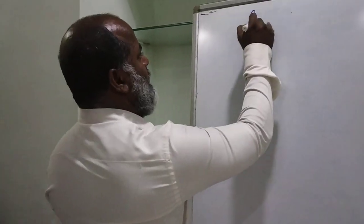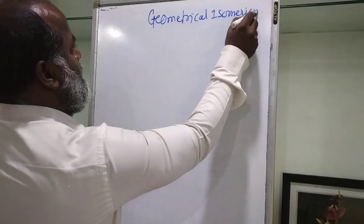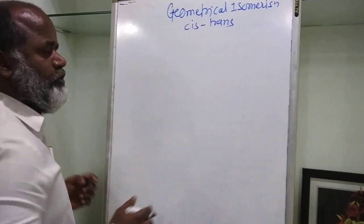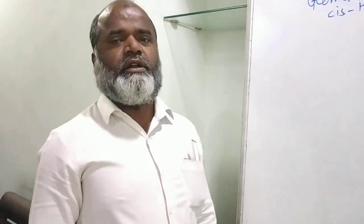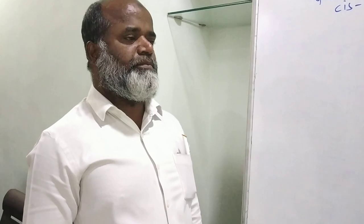We have completed around three types of isomerism: optical isomerism, conformational isomerism. For optical isomerism, a compound must contain a chiral carbon atom, and there should not be certain elements of symmetry. Then only that molecule will show optical isomerism.